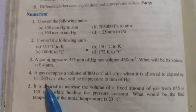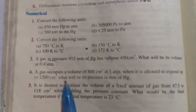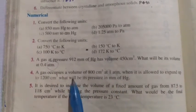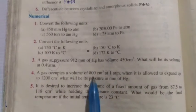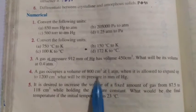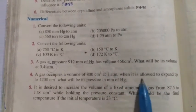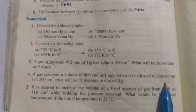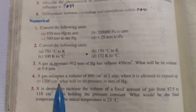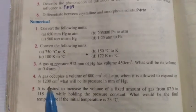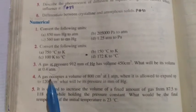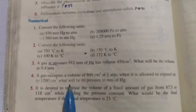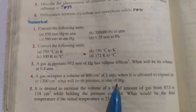Today we will do the next three numericals: 4, 5, and 6. Numerical number 4 statement is: A gas occupies a volume of 800 cm³ at 1 atm. When it is allowed to expand, when it expands to 1200 cm³, the gas will occupy more space and volume will increase from 800 cm³ to 1200 cm³.